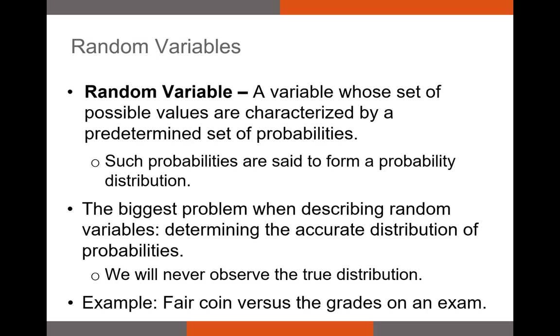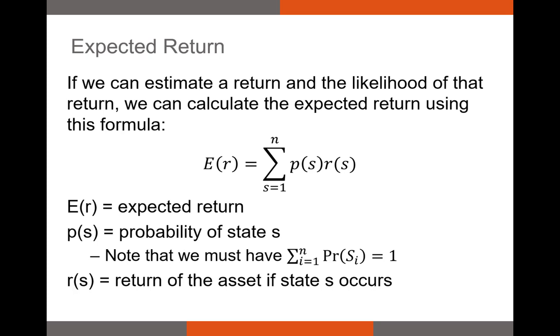Let's talk about the properties of returns, which we're assuming are random variables. First, we'll want to know the expected return, or mean return. One way we can do this is by calculating the probability of each possible return a security could have in a given state and multiplying the probability of each state occurring. So we take the probability of state s occurring times the return if state s occurs, and then we sum up those probabilities times returns. That'll get us our expected return, or E(r).